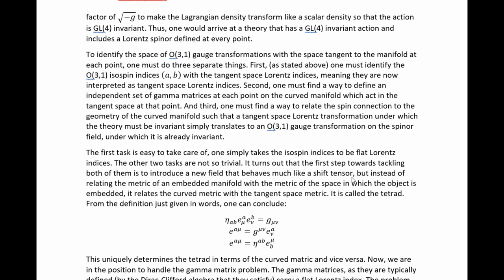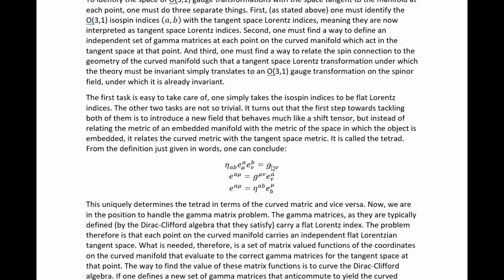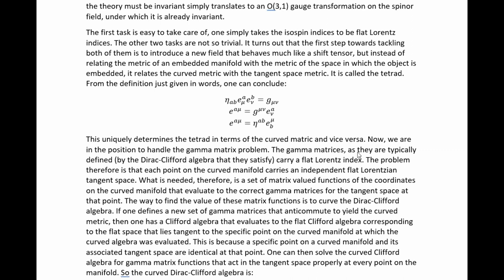The first step toward tackling both remaining tasks is to introduce a new field that behaves much like a shift tensor, but instead of relating the metric of an embedded manifold to the metric of the space in which it is embedded, it relates the curved metric with the tangent space metric. It is called the tetrad. From this definition, one can conclude that the tetrad shifts the indices of the flat tangent space metric to yield the curved metric, and that one can raise and lower the corresponding flat and curved indices on the tetrad with the corresponding metric. This uniquely determines the tetrad in terms of the curved metric and vice versa.